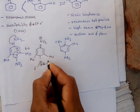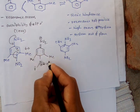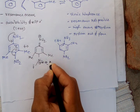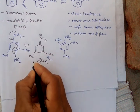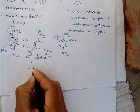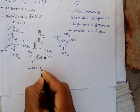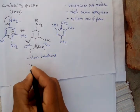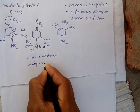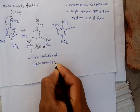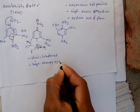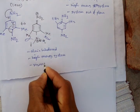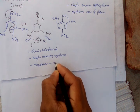In this canonical form there is a negative charge, a methyl group on the ring, and an oxygen. This methyl group on the ring and the oxygen create steric hindrance together. This makes it a high energy system, so resonance is not possible.